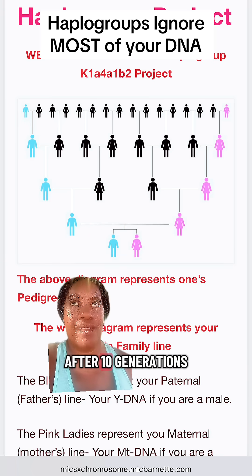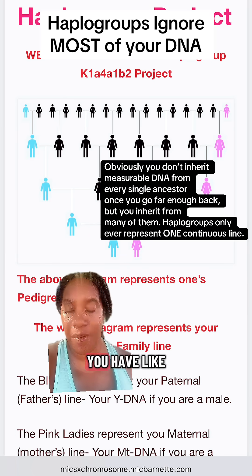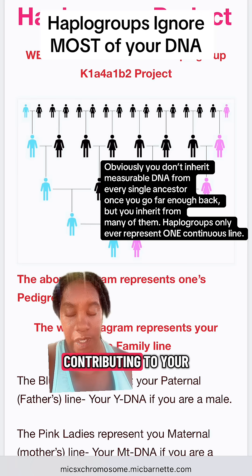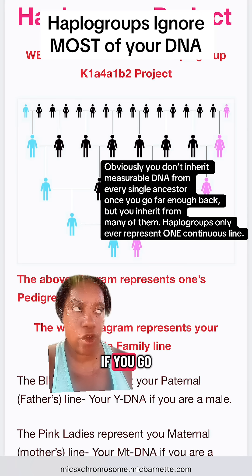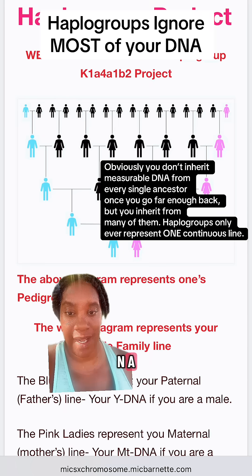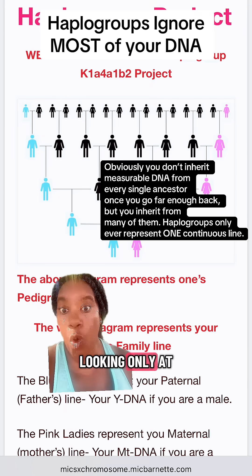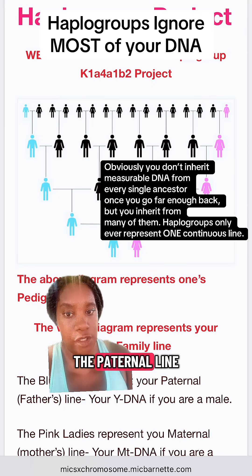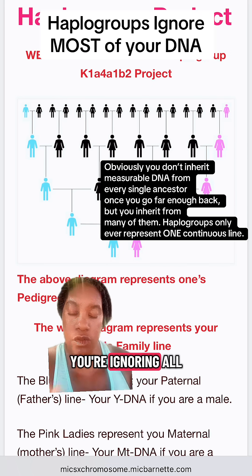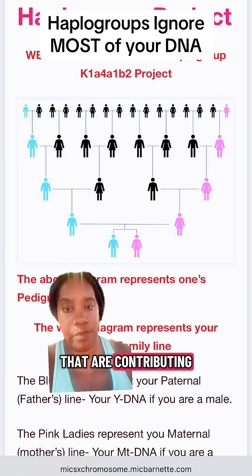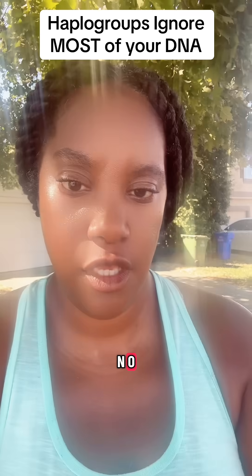After 10 generations back, you have like a thousand people contributing to your DNA. If you go back 20 generations, it's like a million people contributing to your DNA. So when you're looking only at the maternal line or only at the paternal line, you're ignoring all those other people that are contributing to your genome.